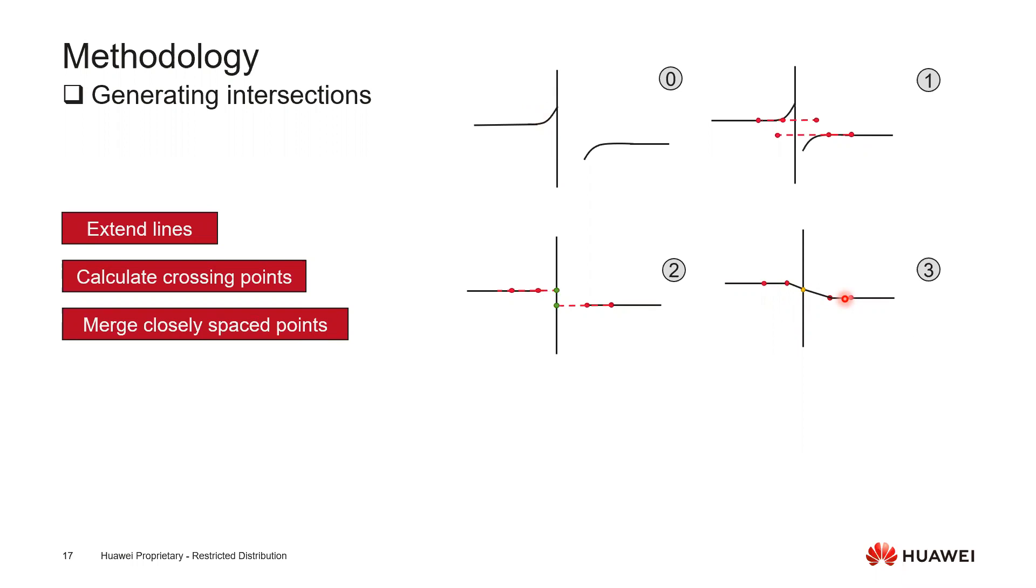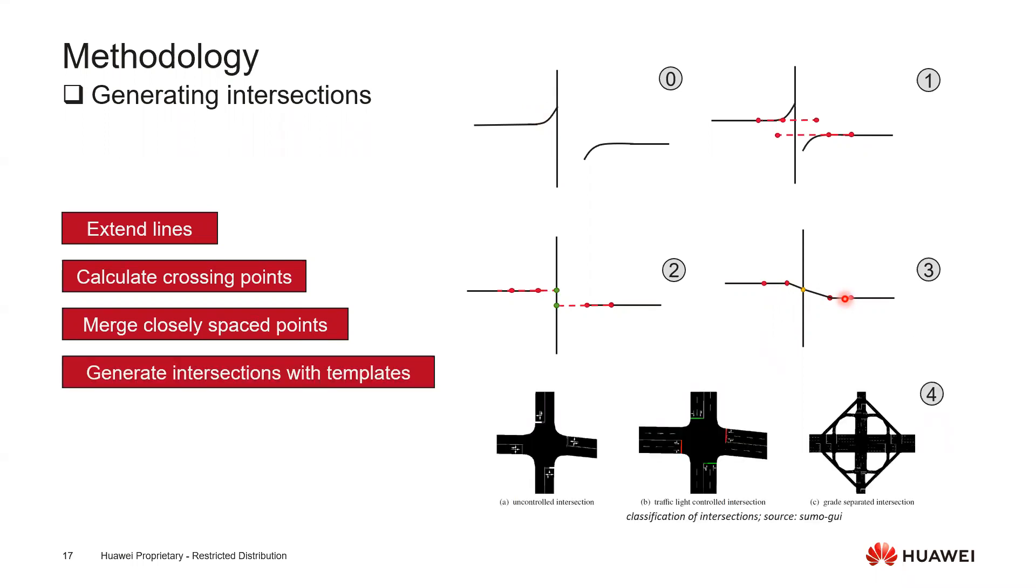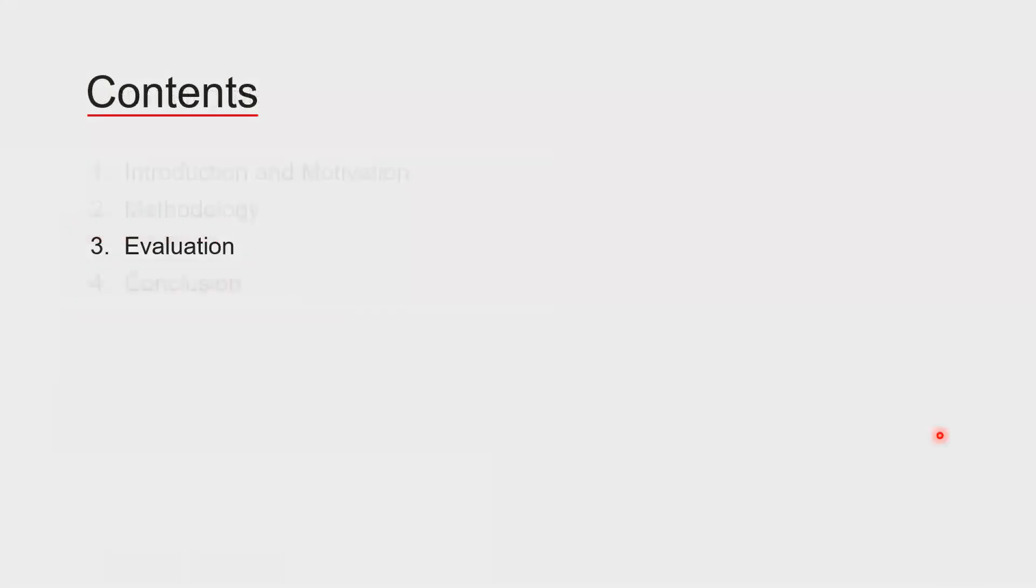Right now we have all the intersections. In order to generate the intersection finally in the road network in the simulation, we use the templates to deploy into each point. There are overall three templates right now we are supporting - this is all based on the road types. For instance, in the last case if this is a freeway crossing point of two freeways, then we will add the template ramps to make sure that there should be no interruption of the traffic flow in the freeway as what it should be.